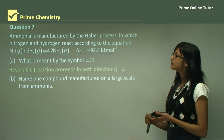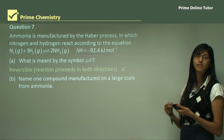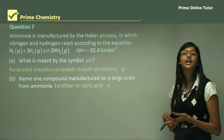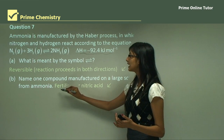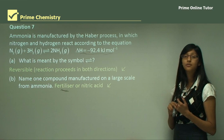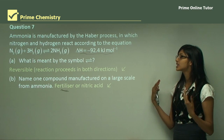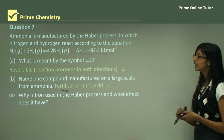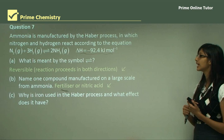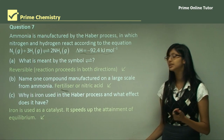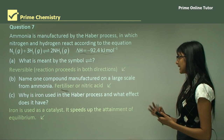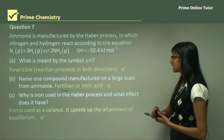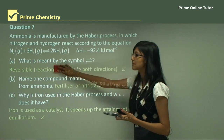Question B asks to name one compound manufactured on a large scale from ammonia. The answer is fertilizer or nitric acid — over 80% of manufactured ammonia is used as fertilizer, and nitric acid is also produced from ammonia for large-scale applications such as explosives. Question C asks why iron is used in the Haber process: iron acts as a catalyst to speed up the process, lowers the activation energy, and helps the reaction reach equilibrium at a faster rate, reducing costs.